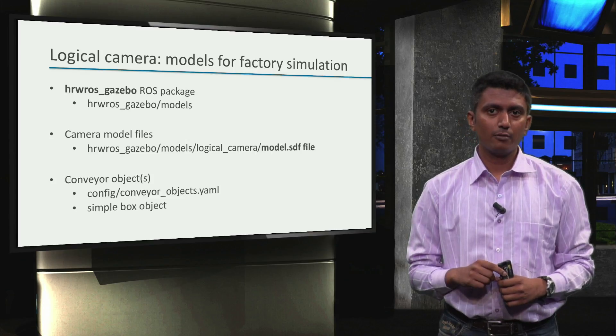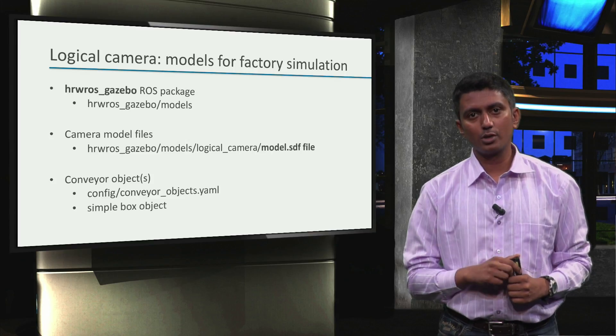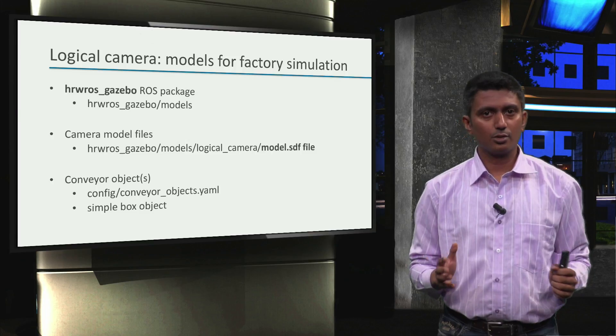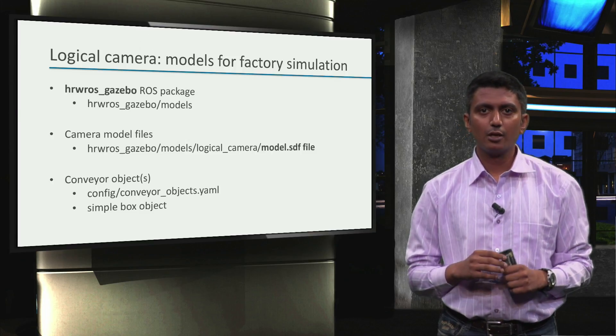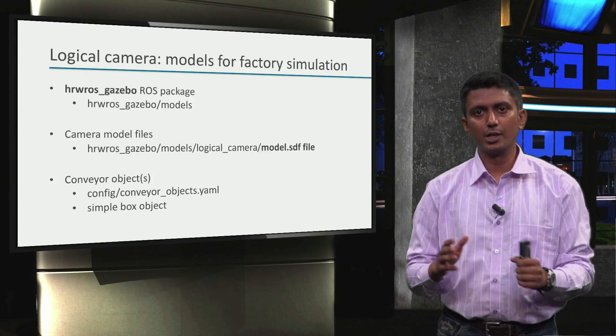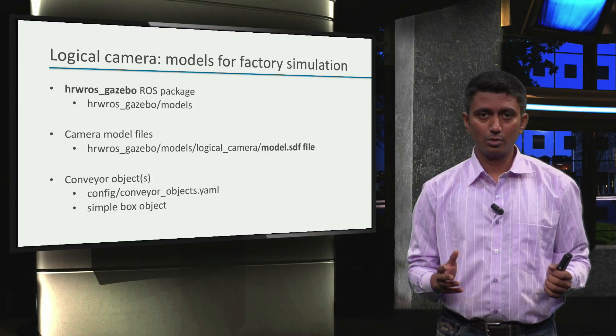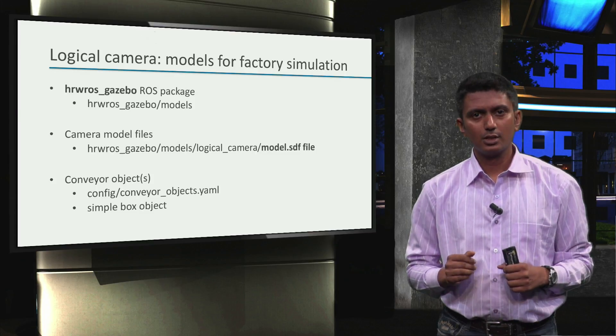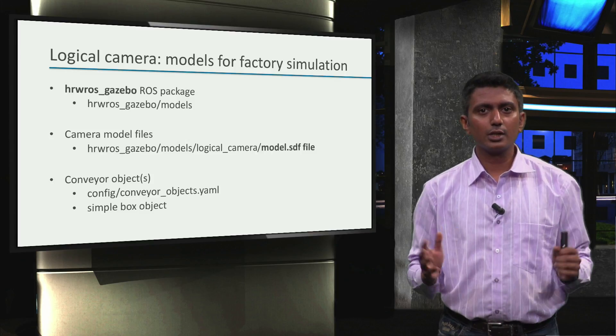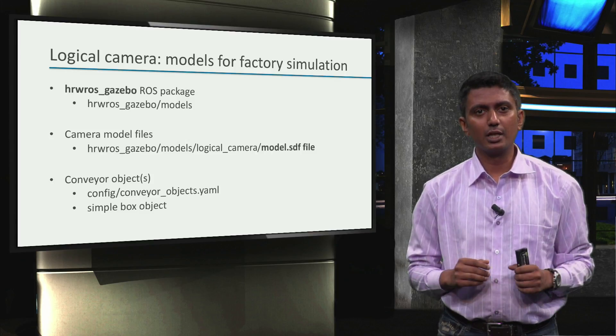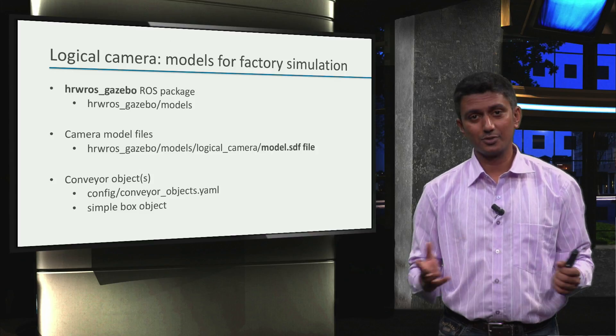In this course, we will only pick up one simple box object, but other objects are also provided from the Gilbreth and Aria projects we have used as the basis to build our simulation. So when you are doing your assignments, just modify this file to include other objects as well and see them appear on the conveyor belt in different poses. Just for fun!